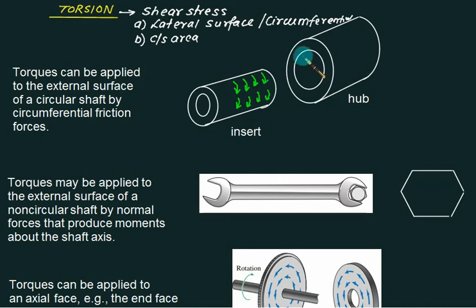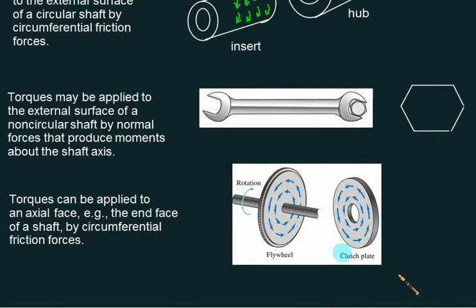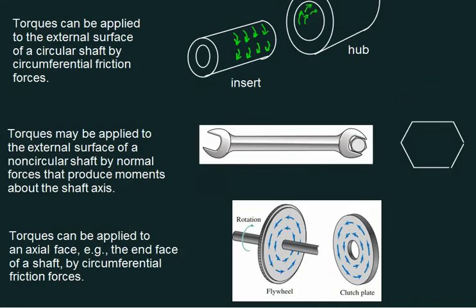So this one is shear stress, and on the inside portion you will get a shear stress in the opposite direction. Whereas if you see the case of a flywheel and clutch plate arrangement, the clutch plate will be mounted on this one. This time the shear action is taking place on the cross-sectional area. So again you can transfer the power from the engine to the main drive using the clutch plate and flywheel. This example is of cross-sectional type, and the previous one is due to circumference.